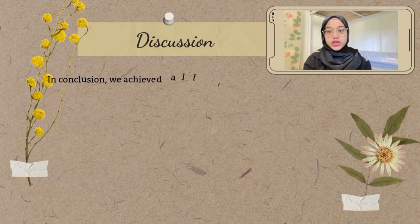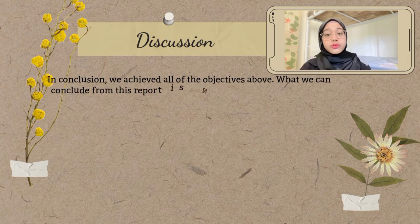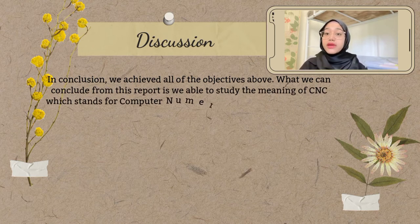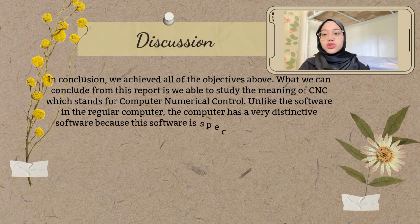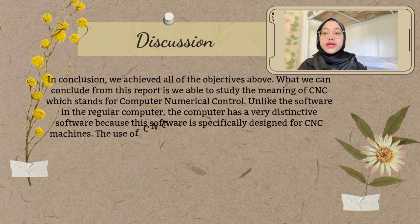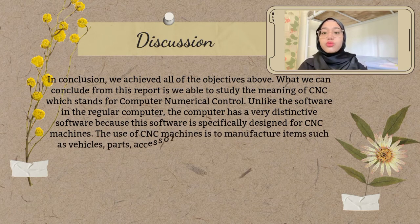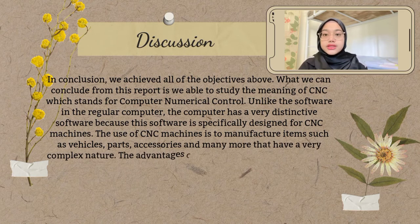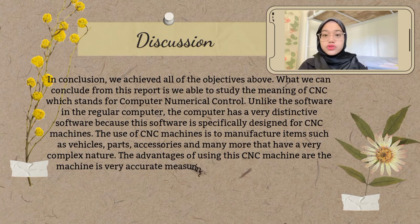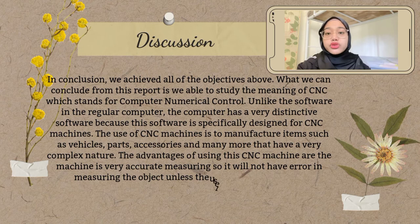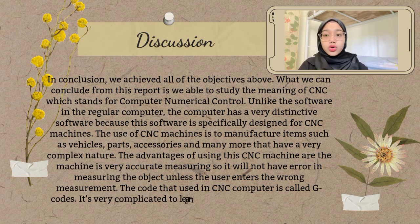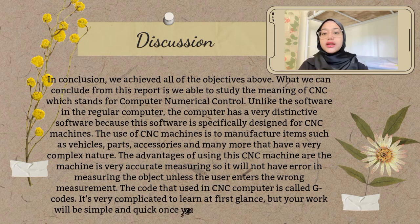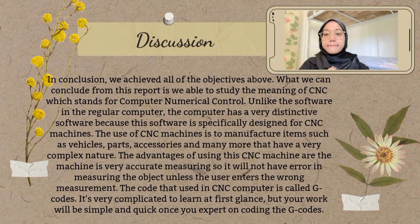In conclusion, we achieved all the objectives above. We are able to study the meaning of CNC, which stands for Computer Numerical Control. Unlike regular computer software, this software is specifically designed for CNC machines. CNC machines are used to manufacture items such as virtual parts and accessories. The machine is very accurate in measuring, so it will not have errors unless the user enters the wrong measurement. The code used in CNC computers is called G-Code. It is very complicated to learn at first, but the work becomes simple and quick once you are proficient in coding the G-Codes.